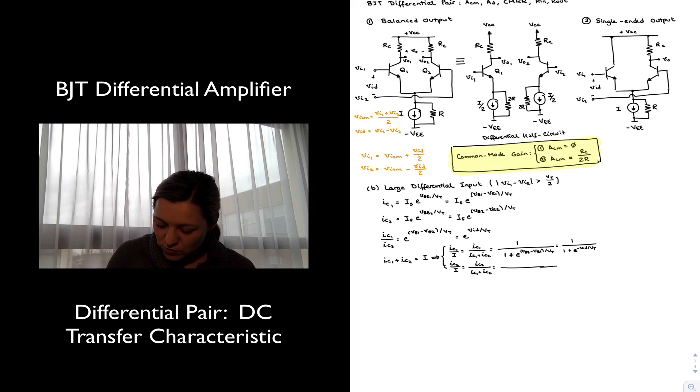And likewise, my second expression, I can rewrite it as 1 over 1 plus E to the VB1 minus VB2, divided by VT, which is equal to 1 over 1 plus E to the VID, divided by VT.